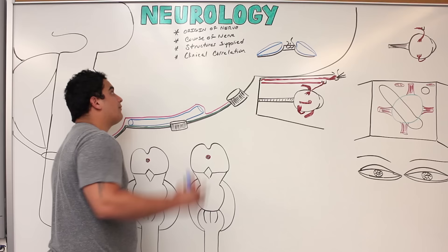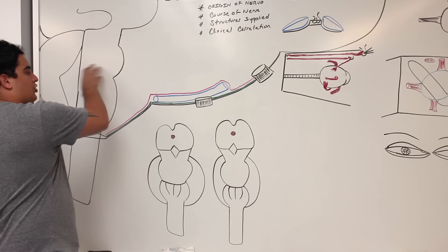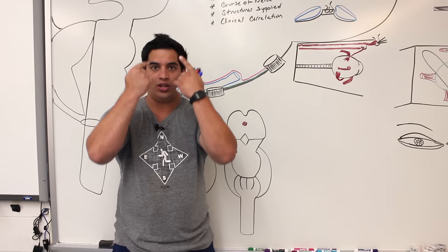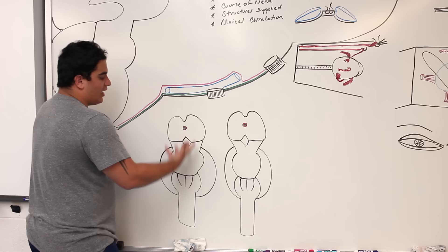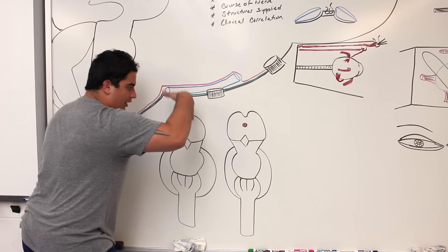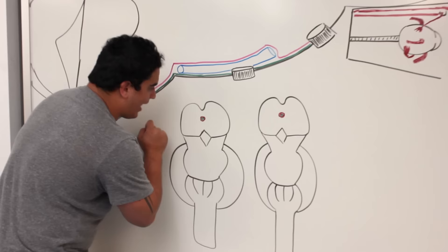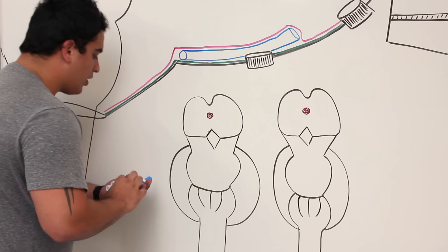So first off, where can we find the third cranial nerve? Looking at the anterior view of the midbrain and taking a cross-section, we see the midbrain. In the center there's a tiny cerebrospinal fluid-containing canal called the cerebral aqueduct, which is superiorly connected with the third ventricle and inferiorly connected with the fourth ventricle.